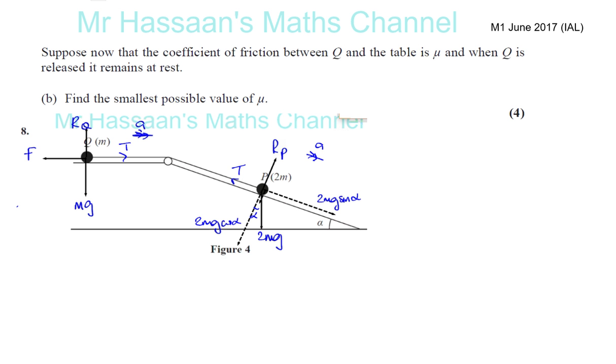So mu is no longer a half. In this new situation that we have here, when Q is released, the system remains at rest. So we're going to find the smallest possible value of mu.